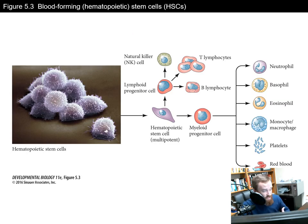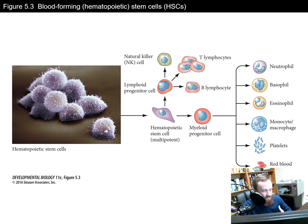Another specialized type of stem cell are hematopoietic stem cells, which we'll call HSCs. HSCs are stem cells that generate blood cells throughout an individual's life. They're formed in the bone marrow and divide to form more HSCs. Alternatively, their daughter cells are capable of becoming either lymph node progenitor cells, which can then become specialized cells within the immune system such as B lymphocytes, T lymphocytes, or natural killer NK cells.